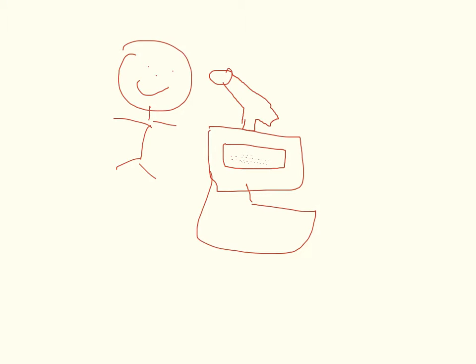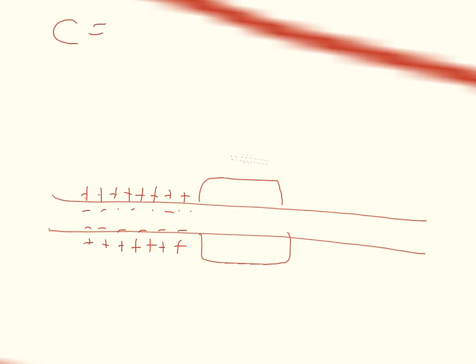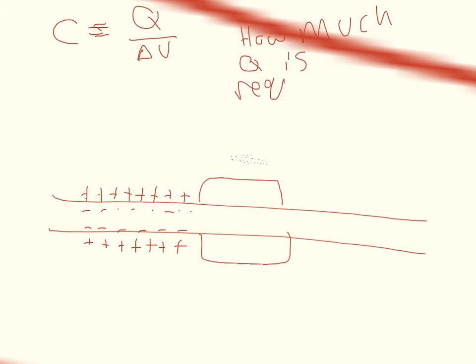Now I want to talk about myelination. At increased magnification we see an axon with myelin around it. We're going to have positives on the outside and separation of charge across a certain distance — this acts as a capacitor in three dimensions. The capacitance is defined as the charge divided by the potential difference — how much charge Q is required to get a given voltage at that capacitance.